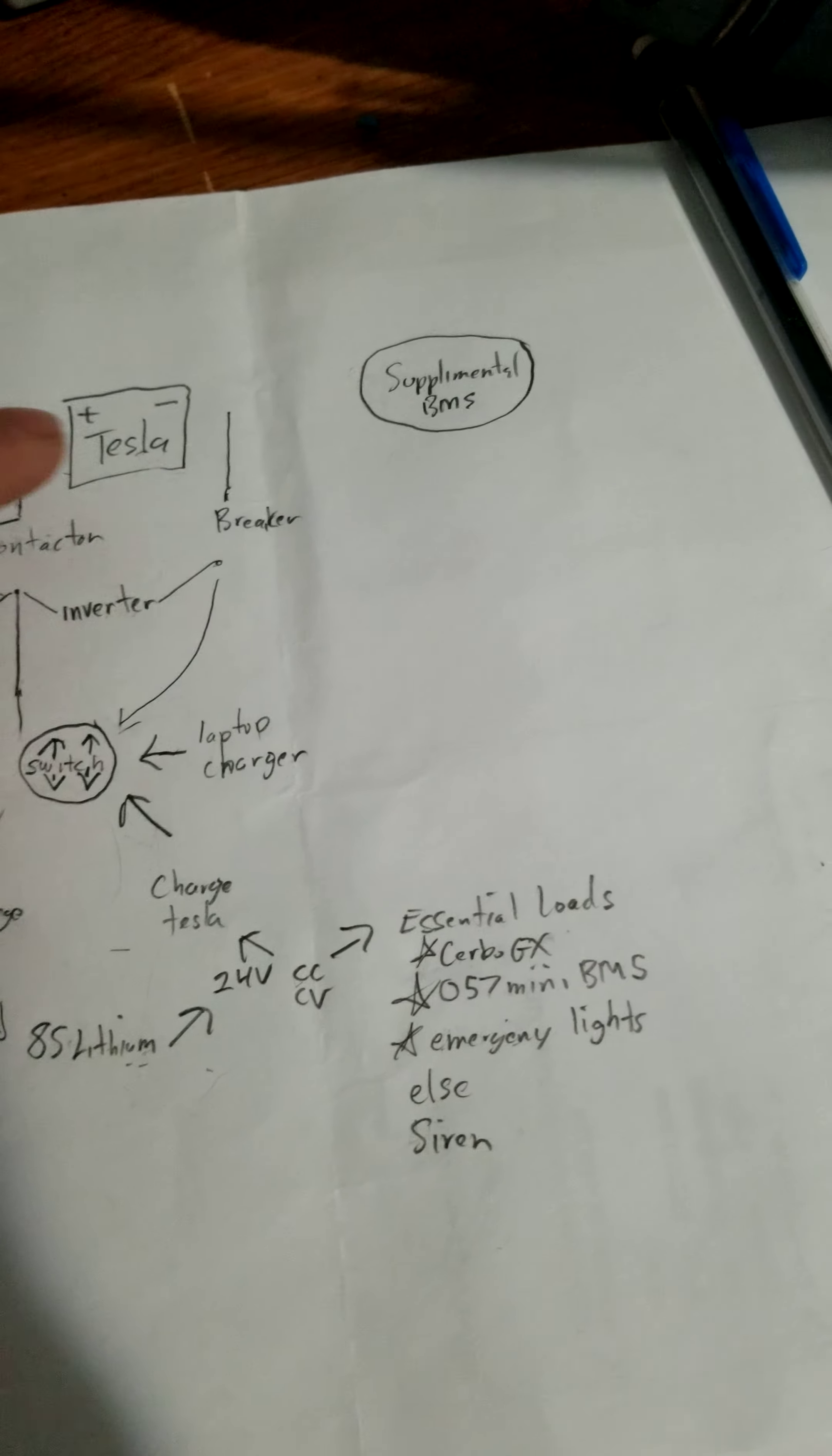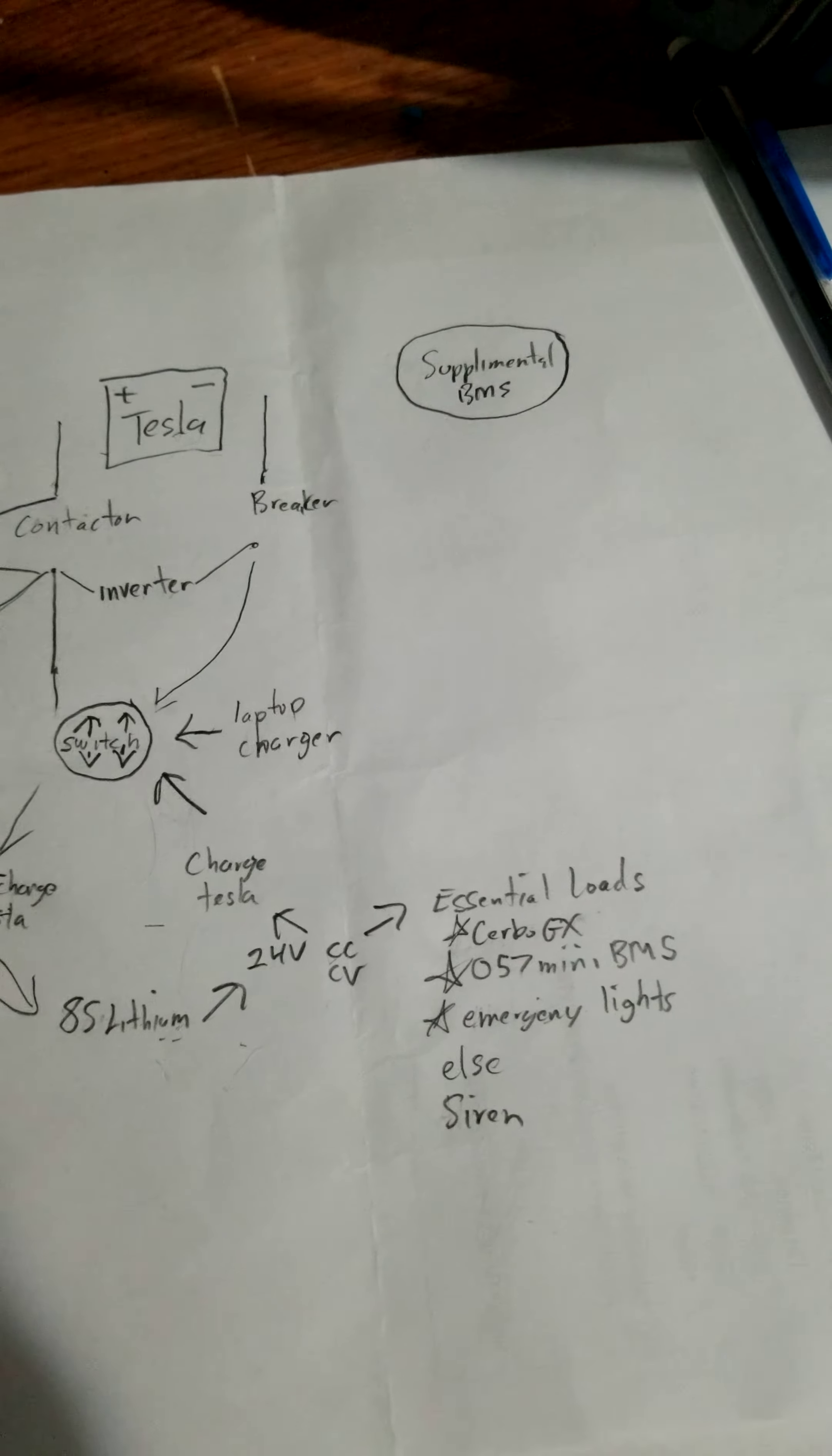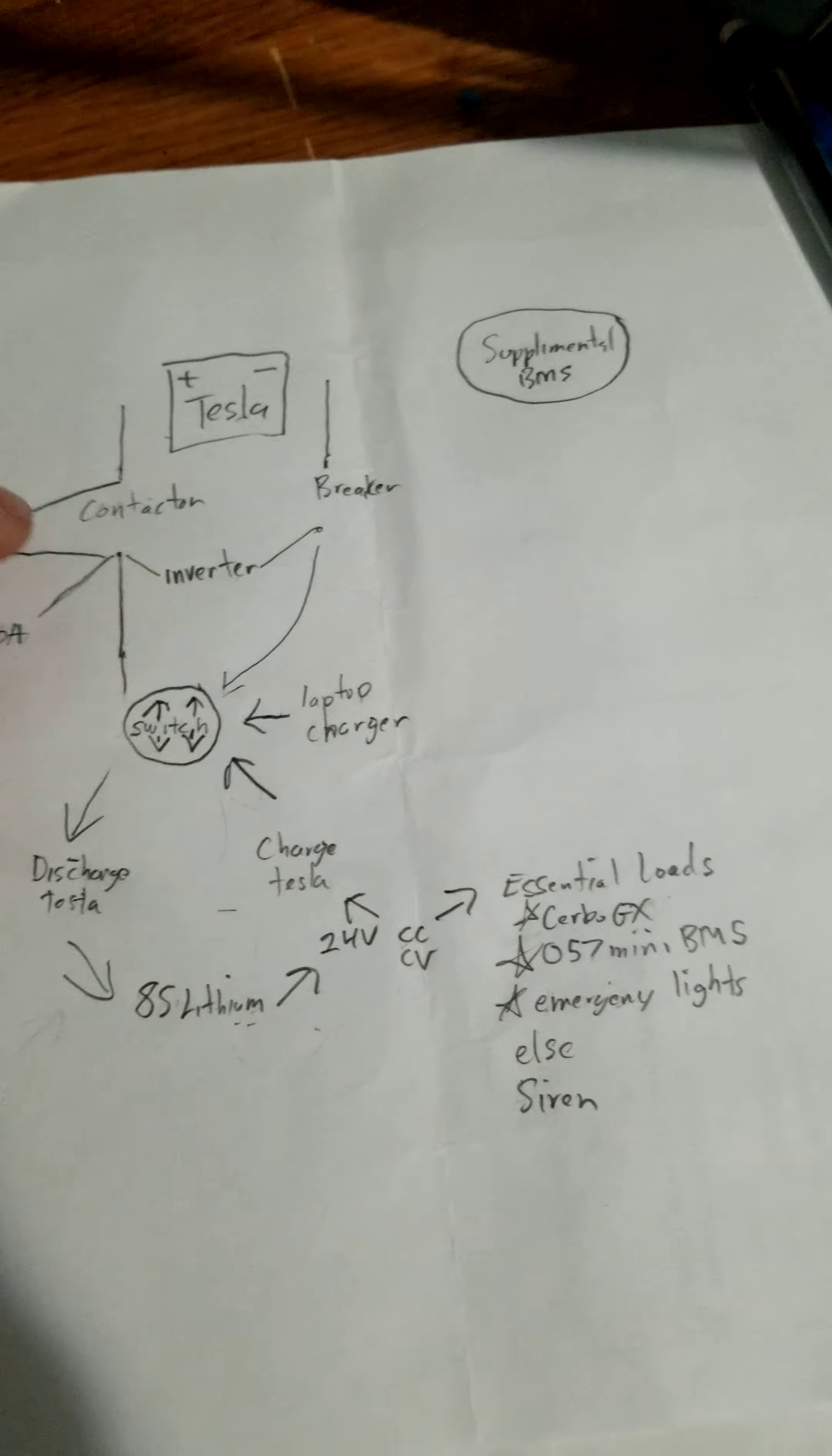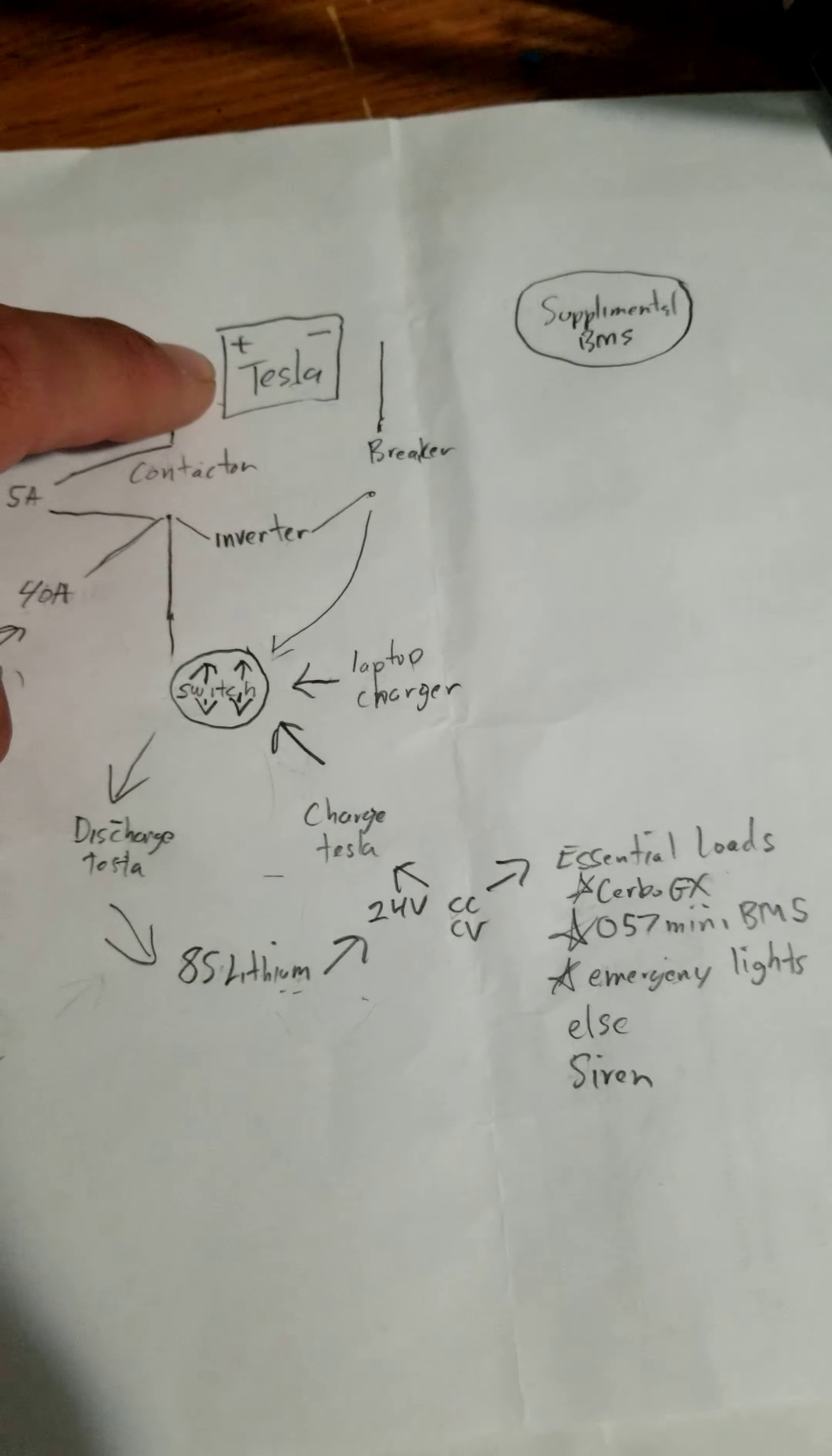It runs alarms that monitor the battery and various sensors. It checks to make sure there's no water in the system. We want to make sure that all this equipment is fully functional because if there is no power to this contactor then the Tesla battery is going to be disconnected.